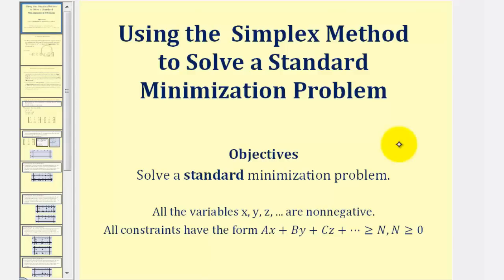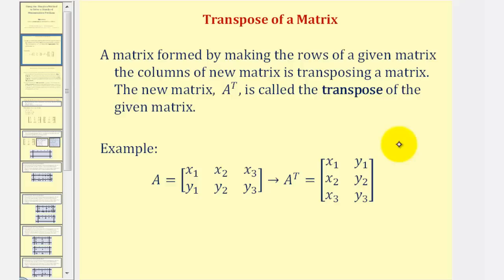Before we look at our example, let's review the transpose of a matrix. A matrix formed by making the rows of a given matrix the columns of a new matrix is called transposing a matrix. The new matrix, using this notation, is called the transpose of matrix A. As an example, if this is matrix A, this would be the transpose of matrix A. Notice how row one becomes column one, and row two becomes column two.